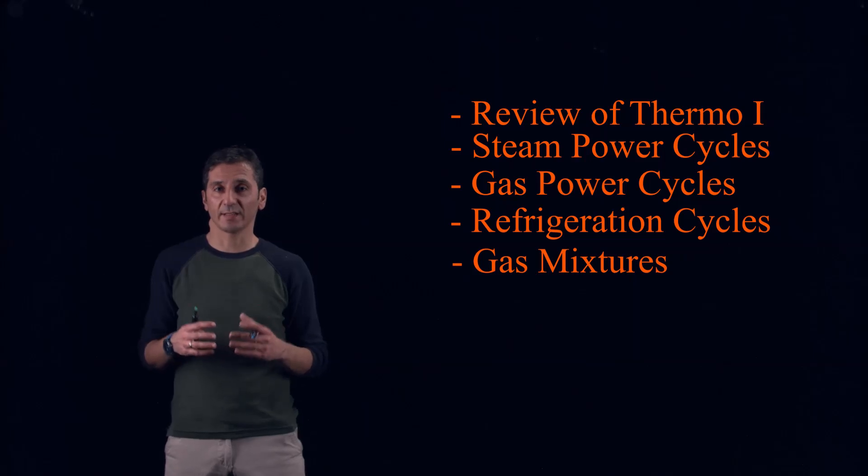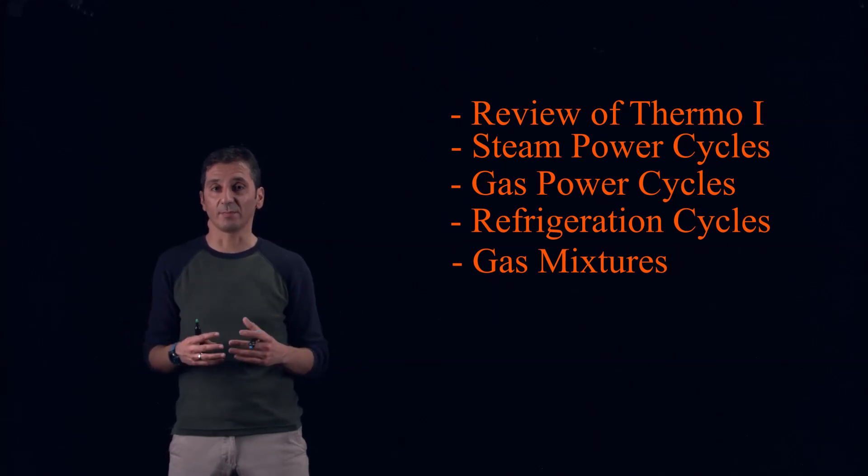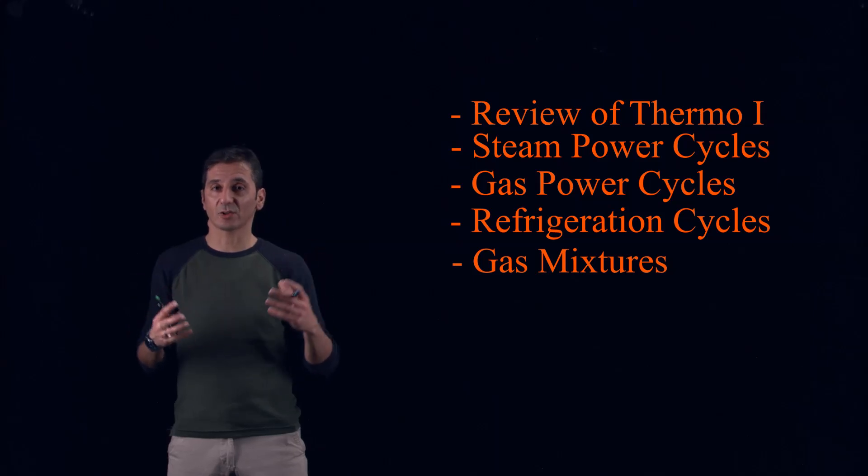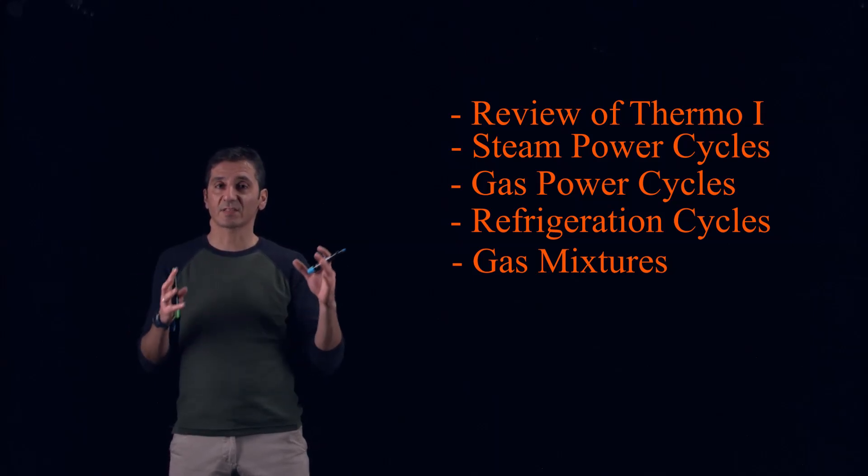We did this actually with air. For example, when we were saying that for air k equals 1.4, the question is, where is this 1.4 coming from? Actually, it comes from mixing the properties of nitrogen and oxygen.